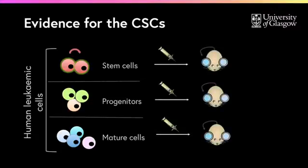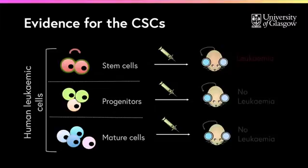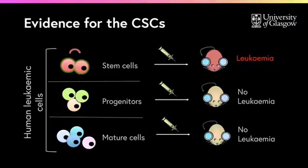and transplanted into immunosuppressed mice. The results of these experiments showed that the mice were developing leukemia only when they were injected with leukemic stem cells, supporting the cancer stem cell notion.